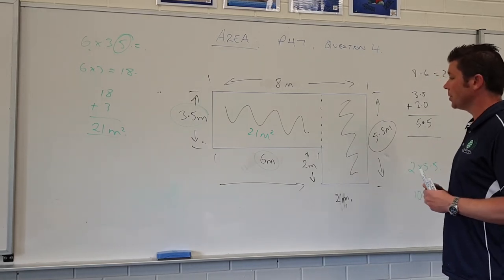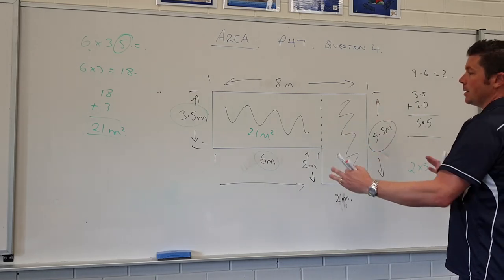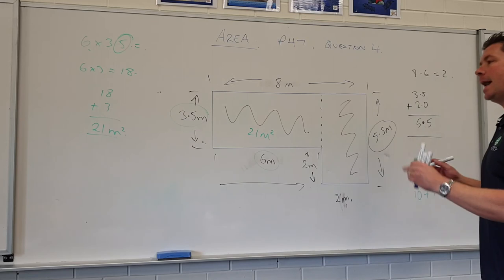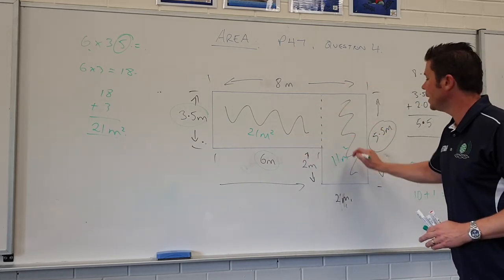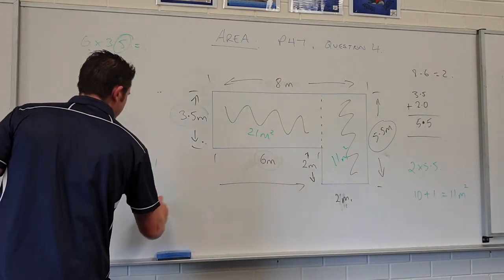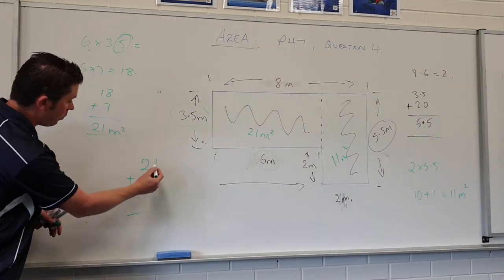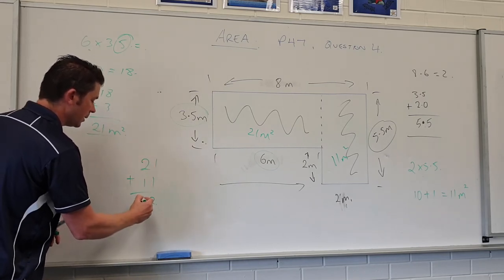So that's basically how we do that. The last thing we do to get the total area of this would be to add the 21 metres which is this here, plus the 11 square metres here. So you'd end up with 21 plus 11, which will give you a total of 1 plus 1 is 2 and 2 plus 1 is 3, so you've got 32 metres squared or 32 square metres.